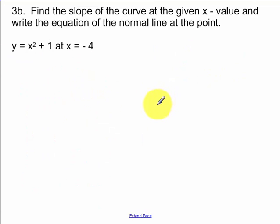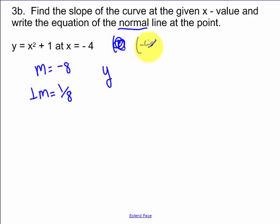Now finding the slope of the curve of the normal line. The slope of our tangent line was negative 8. So our normal slope is going to be 1 eighth. So you do y - it's the same point. So I have the same coordinates of negative 4, 17. y minus y1 is equal to m times x minus x1.